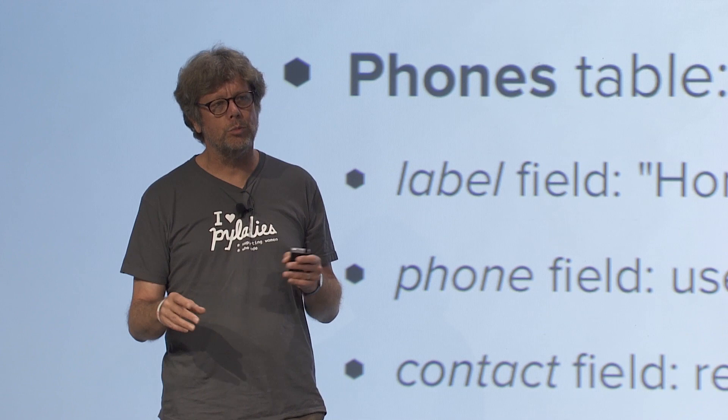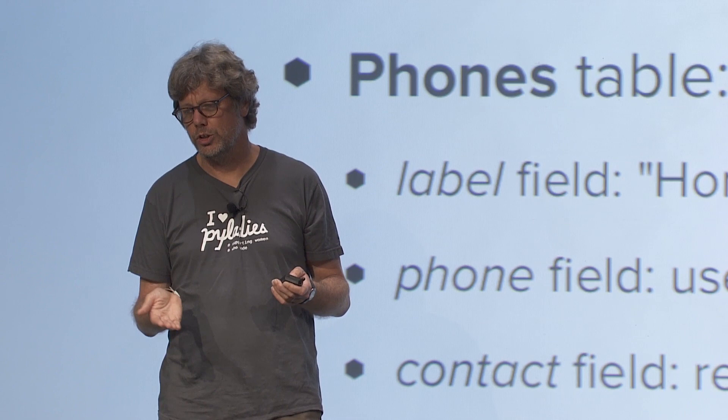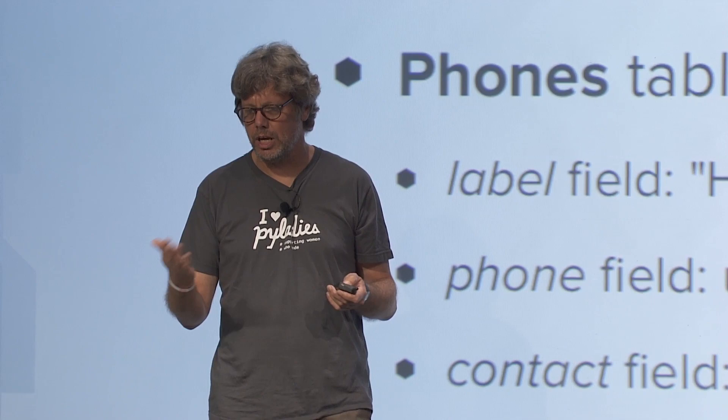You also have a phone number table, and there are multiple phone numbers per contact. One field is a label, one field is the actual phone number, and one field is a reference to the contact table — to a particular record in the contact table. The easiest way to reference another record is by storing its record ID, which is a long random string, as a field in the phone number table. That's really all there is to how you structure your data.